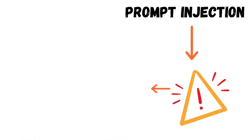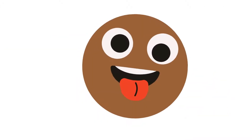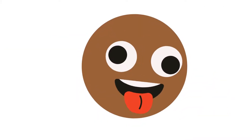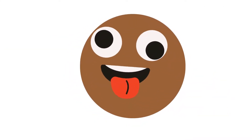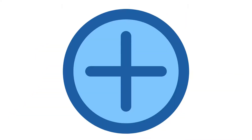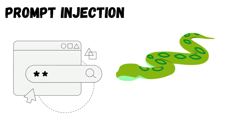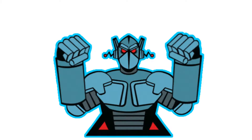Prompt injection is dangerous because it can compromise security and lead to the leakage of confidential information. It can also cause AI systems to behave inappropriately, potentially damaging a company's reputation. Additionally, prompt injection can bypass the protections put in place to ensure AI operates safely and within intended parameters.